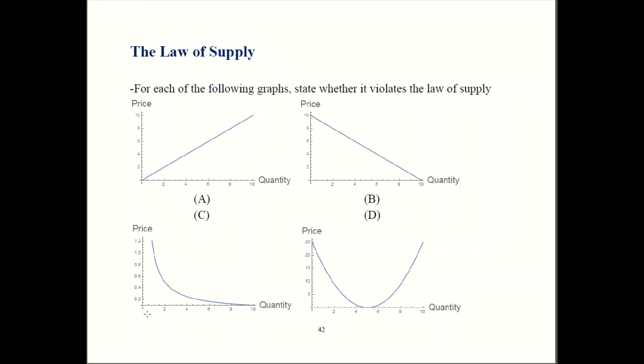Graph C, when price goes up, quantity goes down, that can't be right. So to be clear, the problem with graph C is not that it's nonlinear. Nonlinearity is okay. We established that earlier. The problem with graph C is that whenever price goes up, quantity goes down. That's inconsistent with the law of supply.